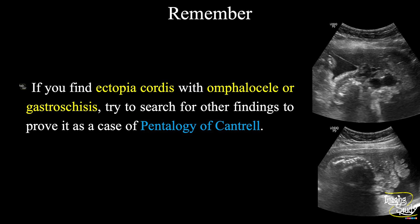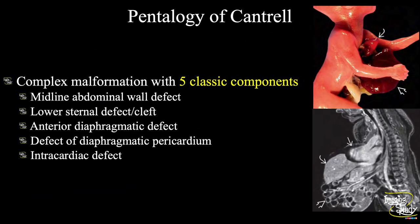Here is a short slide about pentalogy of Cantrell. It is a complex malformation with five classic components: midline abdominal wall defect, lower sternal defect or cleft, anterior diaphragmatic defect, defect of diaphragmatic pericardium, and intracardiac defect.